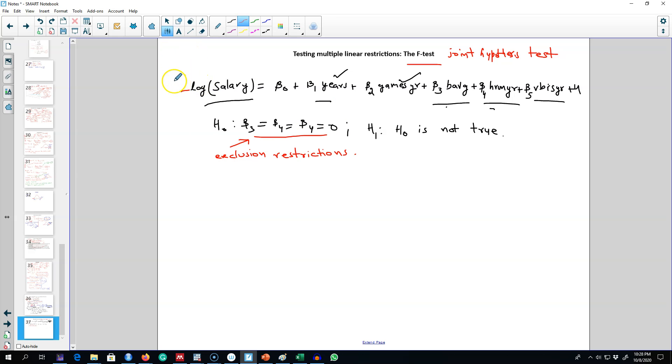Then we are going to impose these restrictions and run a restricted model which will be log of salary as a function of—we imposed these three restrictions, and if these beta parameters are zero then we'll be left with this restricted model.